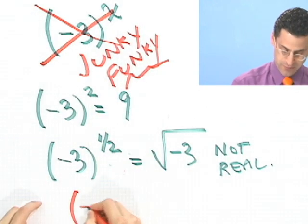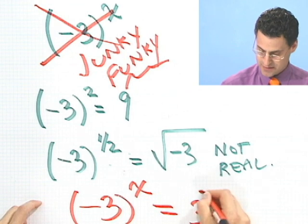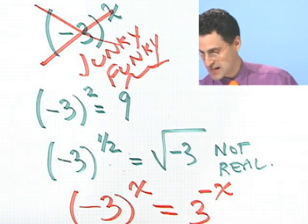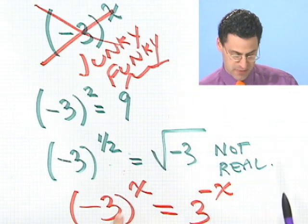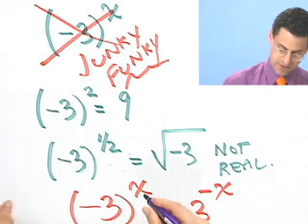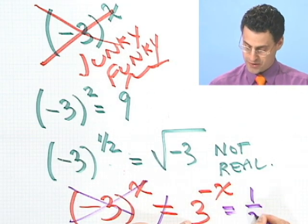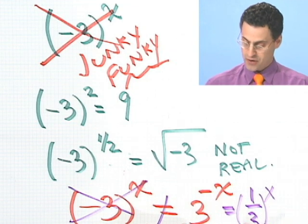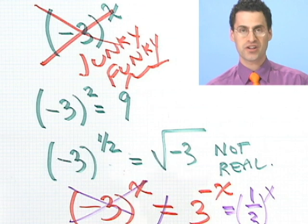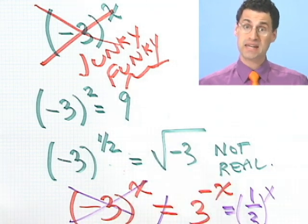For those who might say, isn't minus 3 to the x just equal to 3 to the minus x — those people are sadly mistaken. These are not equal at all. Minus 3 to the x power is the negative base, which we will never graph. But 3 to the minus x is perfectly fine — that's just one-third to the x. So the only bases allowed are positive bases. They could be less than 1 or bigger than 1, but they can't be negative.